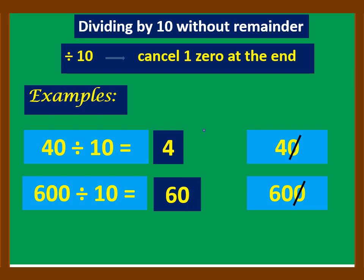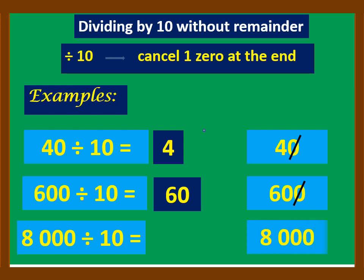8,000 divided by 10 — rewrite 8,000 and cancel one zero, so the answer is 800.